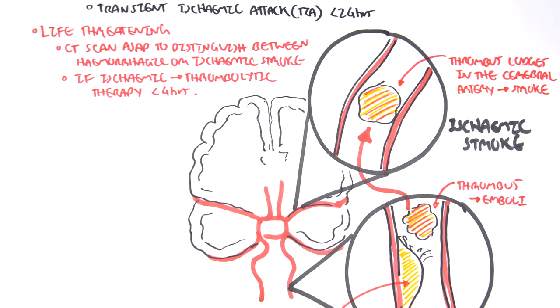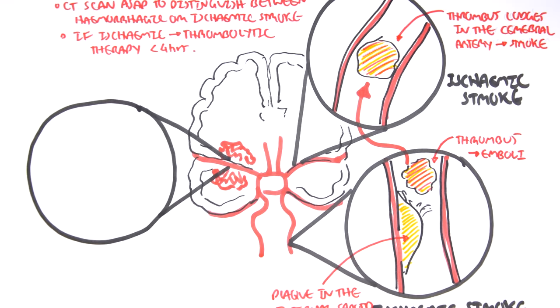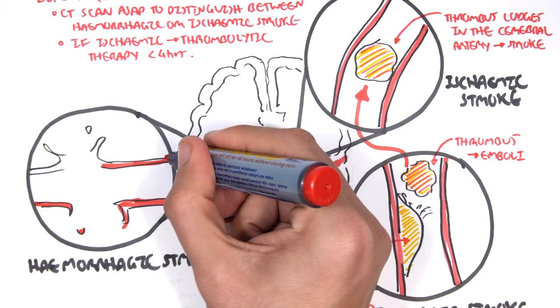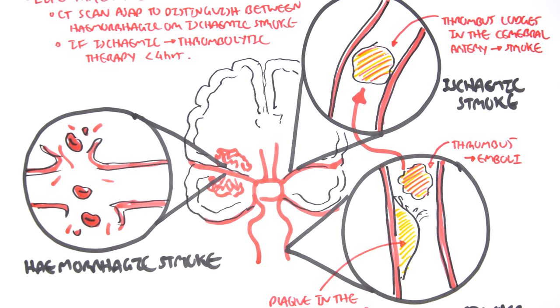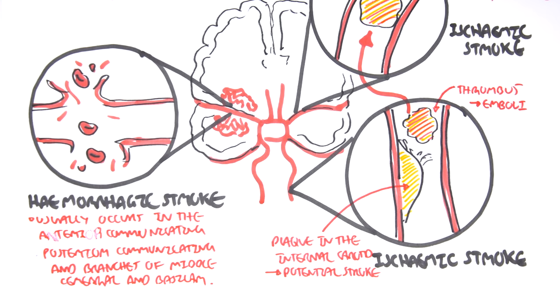The second type of stroke is hemorrhagic stroke. A hemorrhage is essentially when we have the rupturing of a vessel with blood spilling out. Zooming into the middle cerebral artery, the vessel can have an aneurysm that grows until it ruptures — that is hemorrhagic stroke. Hemorrhagic stroke usually occurs in the anterior communicating arteries, posterior communicating arteries, and branches of the middle cerebral and basilar arteries. That was just a quick overview of stroke.